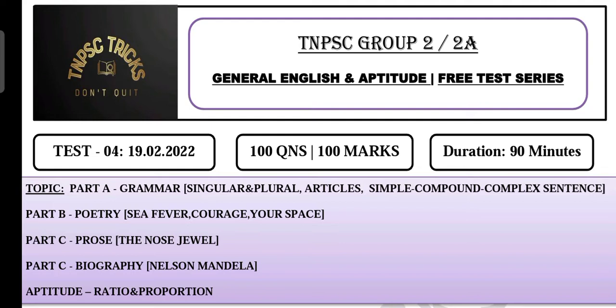In general English, there are 3 topics: singular and plural, articles, and identify the types of sentence. Talking about the poem, there are 3 poems.